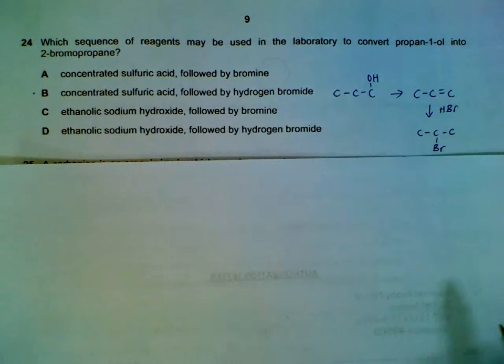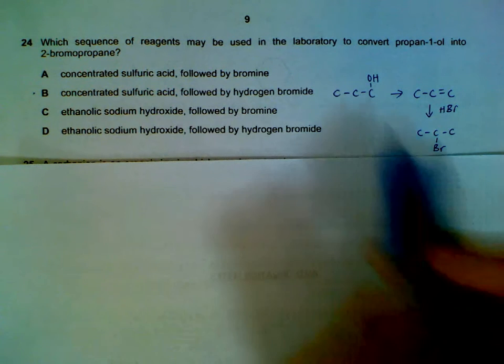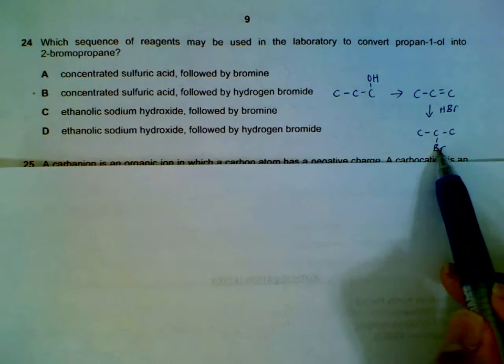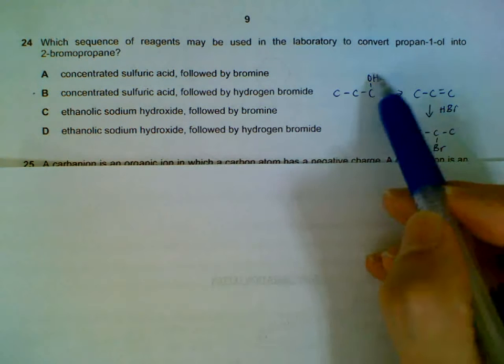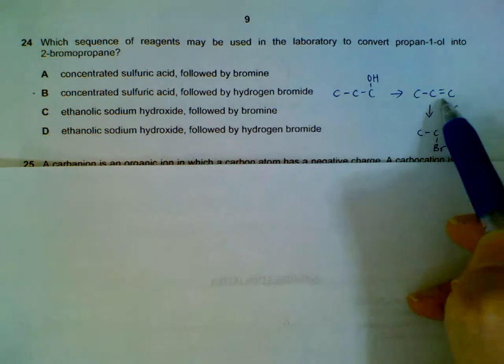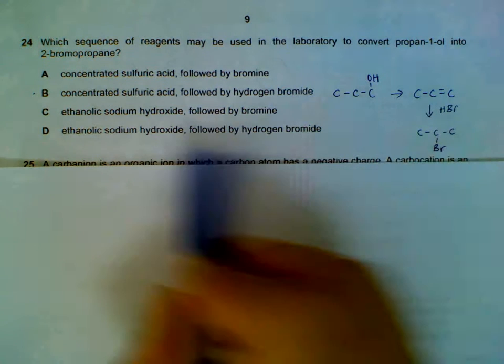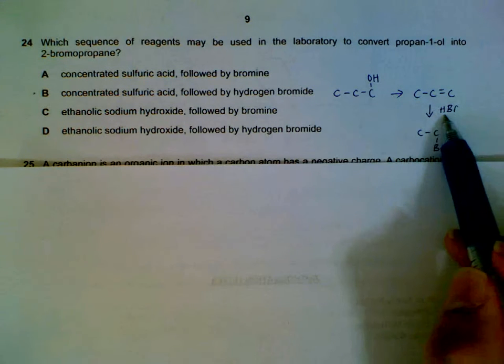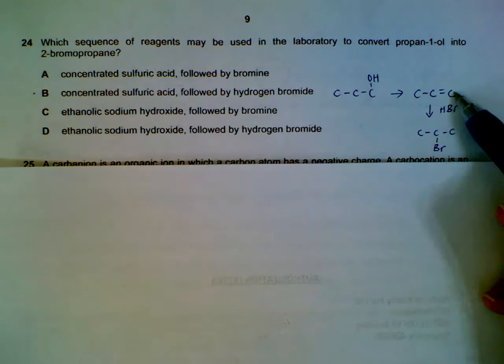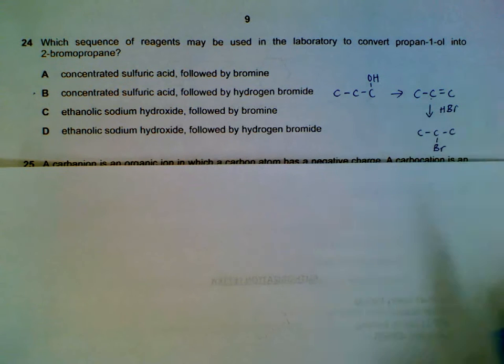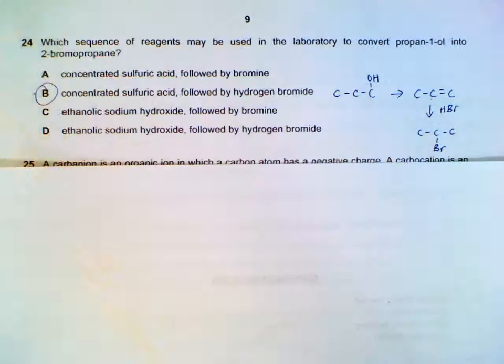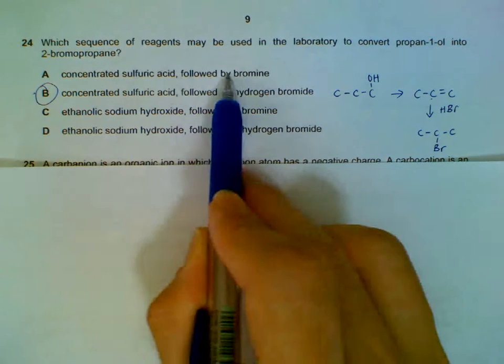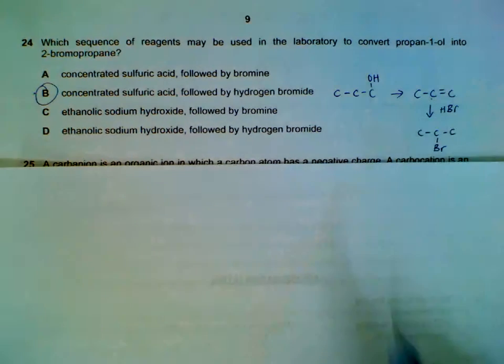24, how can we convert propan-1-ol to 2-bromopropane? So, we start off with propan-1-ol. And we want to get the bromine on the second carbon. What we do is we create a double bond first, which is done by elimination. So, we use concentrated sulfuric acid. We dehydrate it. We get our double bonds. And then we add HBr. H will come to this carbon, Markovnikov rule. Br will go to the second carbon. If you eliminate for option A and do bromine, then you get Br across both carbons, which is not what we want.